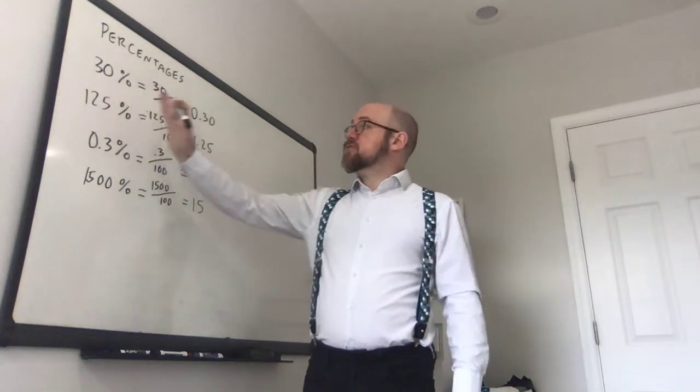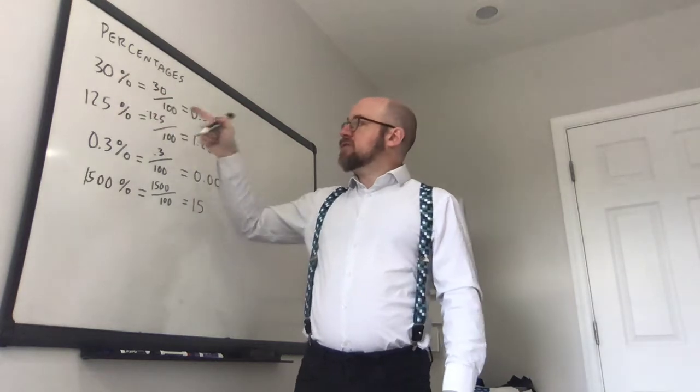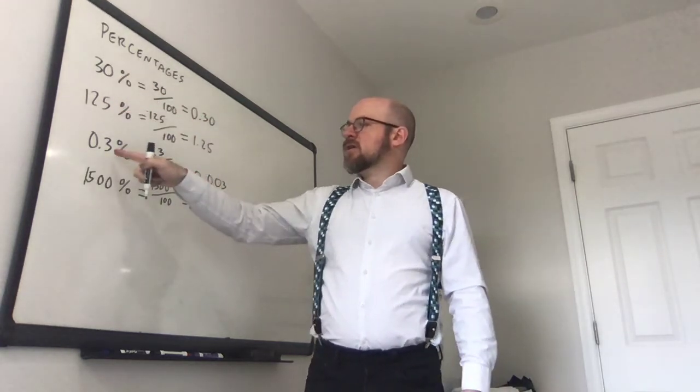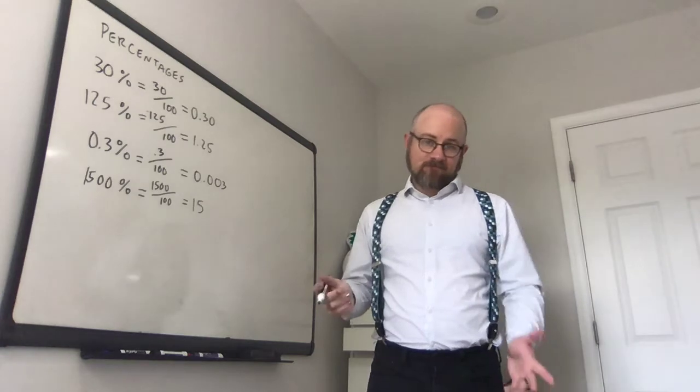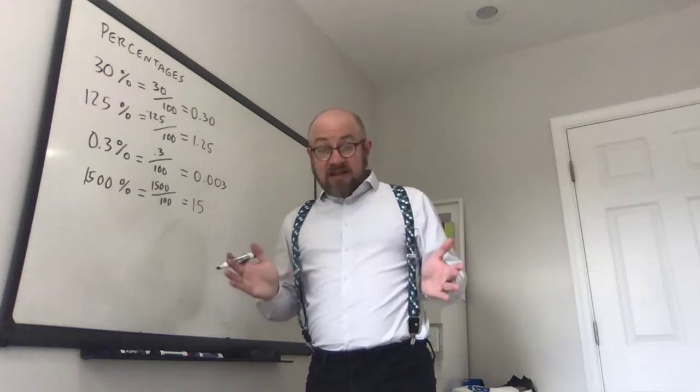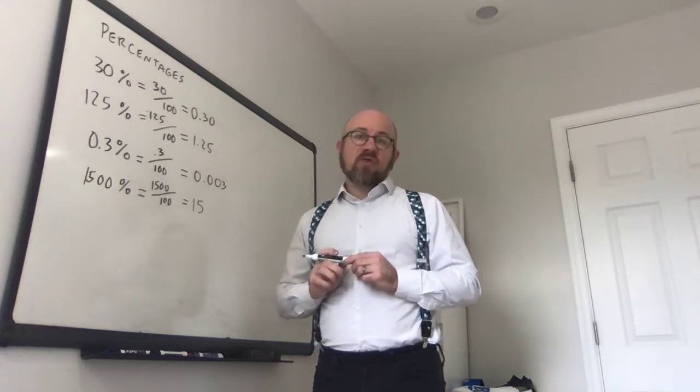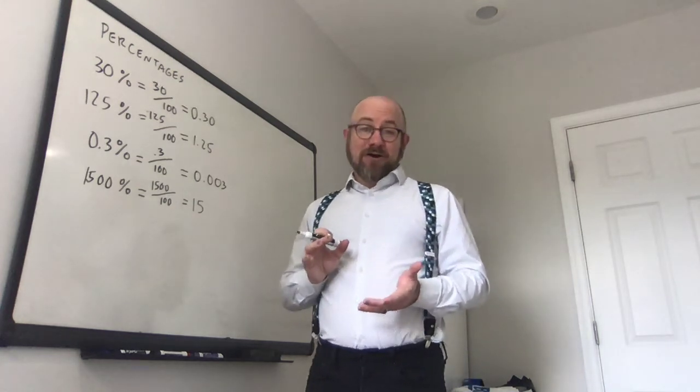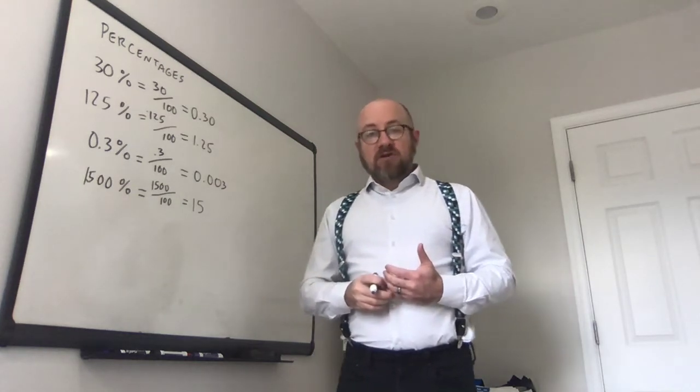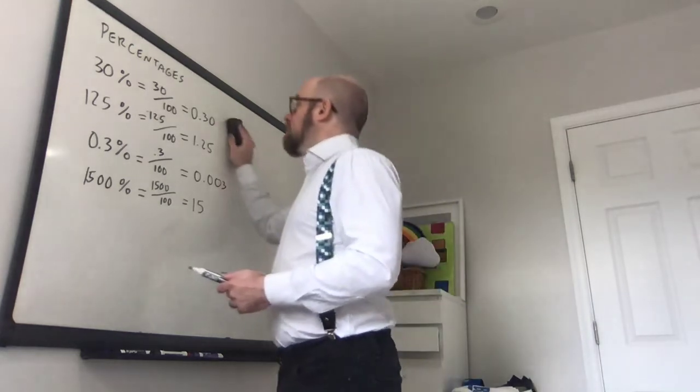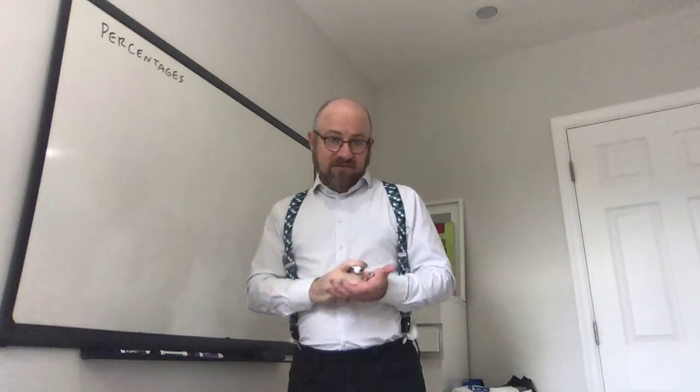Any number can be written as a percent. If you want to change a percent into a decimal, you move the decimal place over by two points. So 30 becomes 0.30, 125 becomes 1.25, 0.3 percent becomes 0.003, 1,500 percent becomes 15. That's percentages. Like I said, I'm sure you've all seen this before. I just wanted to review some of the details here. But the tricky thing with percentages is how they're used and the way that they interact with the English.